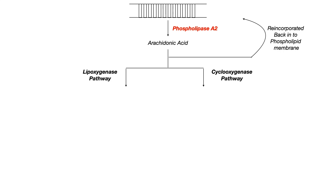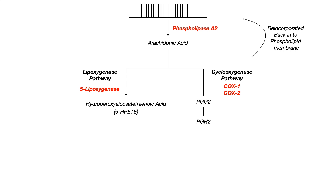Let's sketch out the pathway. On the left-hand side, in the lipoxygenase pathway, the enzyme is 5-lipoxygenase, and that will convert arachidonic acid into something known as 5-HPETE. On the right-hand side, in the COX pathway, the enzymes COX-1 and COX-2 will convert arachidonic acid first into PGG2 and then into PGH2. Both PGG2 and PGH2 are considered cyclic endoperoxides, and it is from these cyclic endoperoxides that other bioactive downstream products are derived.